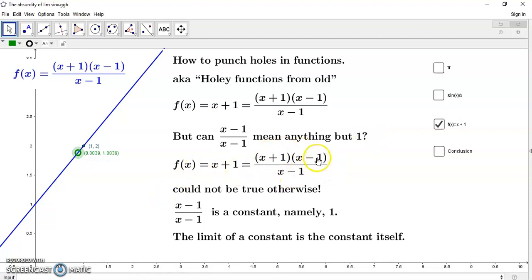So if we move this along here, you'll notice that if we try to put it on 1, 2, there's no point there. Simply because you cannot have 0 over 0. And that's just utter garbage, because what else can x minus 1 over x minus 1 mean? But 1.